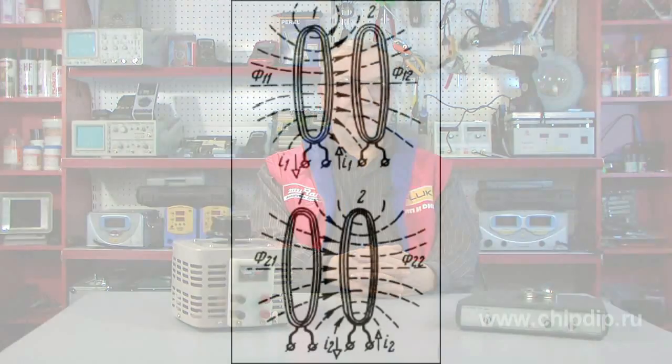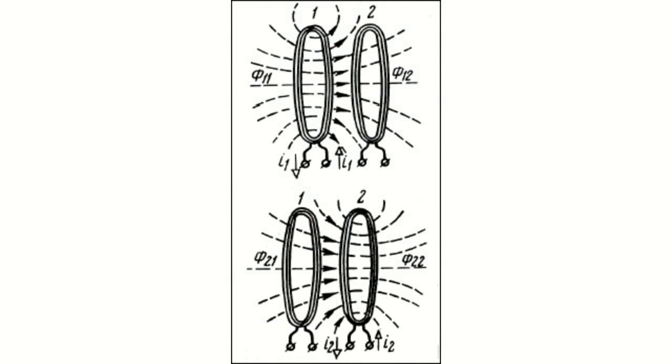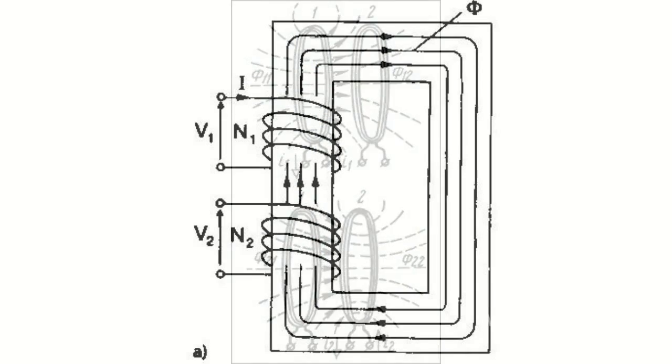The operation principle of a transformer is based on the phenomenon of mutual induction. Mutual induction is a phenomenon of inducing the EMF induction in one circuit, the coil, when changing the electric current into another circuit.